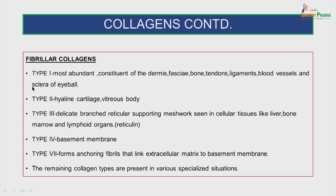The fibrillar collagens: Type I is most abundant and is the constituent of the dermis, fasciae, bone, tendons, ligaments, blood vessels and sclera of the eyeball. Type II is seen in hyaline cartilage and the vitreous body. Type III forms a delicate branched reticular supporting meshwork seen in cellular tissues like liver, bone marrow and lymphoid organs. Type IV is seen in the basement membranes. Type VII forms the anchoring fibrils that link extracellular matrix to the basement membrane. The remaining collagen types are present in various specialized situations.